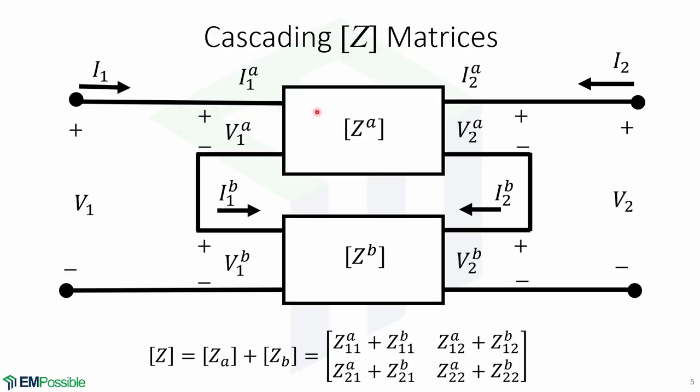Now we will learn how to cascade impedance matrices for two-port networks. Here we have ZA which is an impedance matrix and also a two-port network and is connected in series with ZB which is an impedance matrix and is also a two-port network.